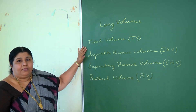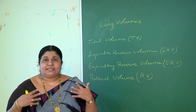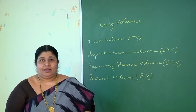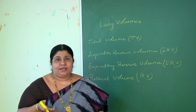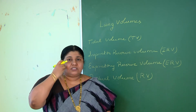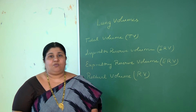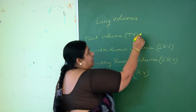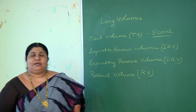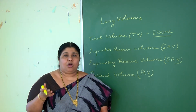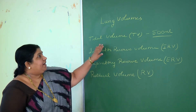Coming first to tidal volume — what is tidal volume? The amount of air a person inhales or exhales normally is called tidal volume. Normally we are inhaling some amount of air and exhaling some amount of air. That amount of air going into and coming out of our respiratory system normally is called tidal volume. Tidal volume is 500 ml.